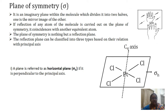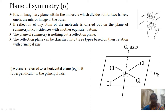The plane of symmetry is an imaginary plane within the molecule that divides it into two halves, each being a mirror image of the other. If reflection of any atom across a particular plane of symmetry is carried out, it coincides with another equivalent atom. The plane of symmetry is also called a reflection plane, and it can be classified into three types based on its relation with the principal axis.